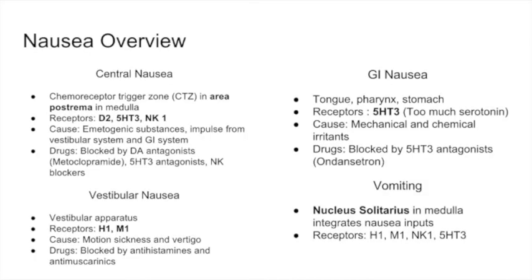Our next topic is nausea and vomiting. I wanted to give you an overview of nausea. Nausea comes from different places. There is central nausea that comes from the brain. There is vestibular nausea that comes from the vestibular apparatus. There is GI nausea — nausea that comes from the gut.